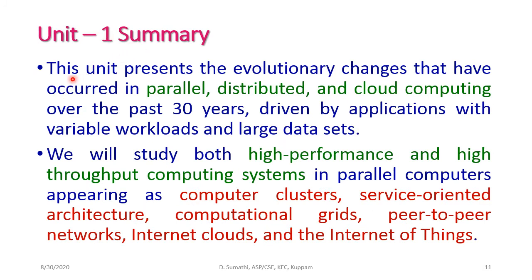In the first unit, we are going to study the evolutionary changes that have occurred in parallel, distributed, and cloud computing over the past 30 years, driven by applications with variable workloads and large data sets. We will see evolutionary changes in processors, network, memory, and storage devices — all combined to form parallel or distributed networks. We will study both high-performance computing and high-throughput computing systems, appearing as computer clusters, service-oriented architectures, computational grids, peer-to-peer networks, internet clouds, and the Internet of Things.